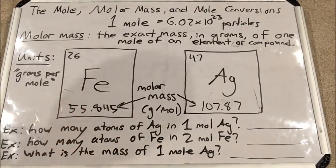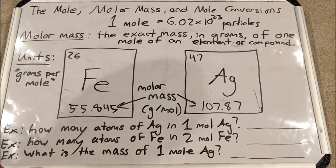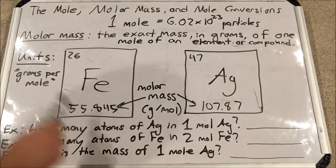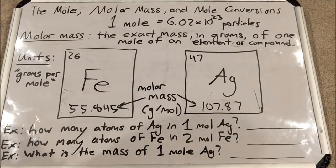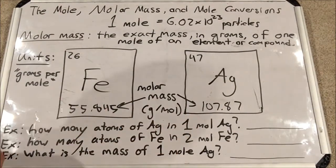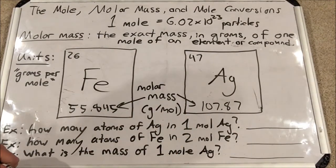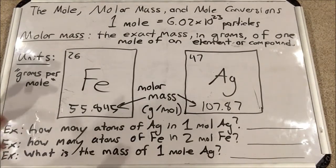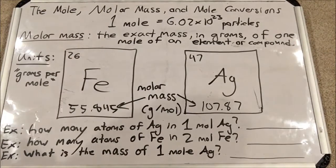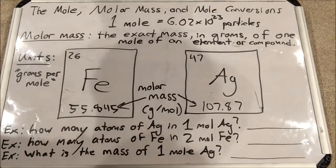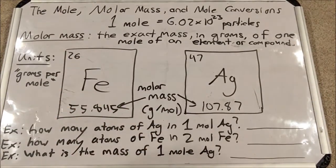For iron, if I have a mole of iron I have 55.845 grams of iron. If I have a mole of silver I have 107.87 grams of silver. So this is how we go from moles to grams, or moles to mass.